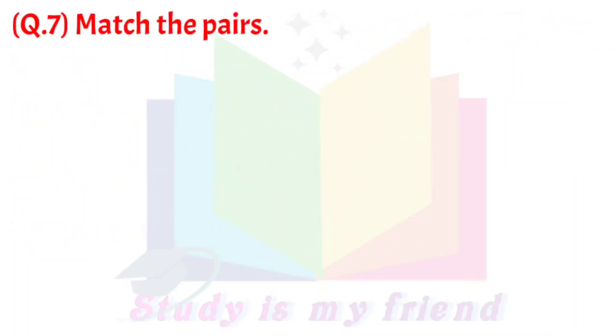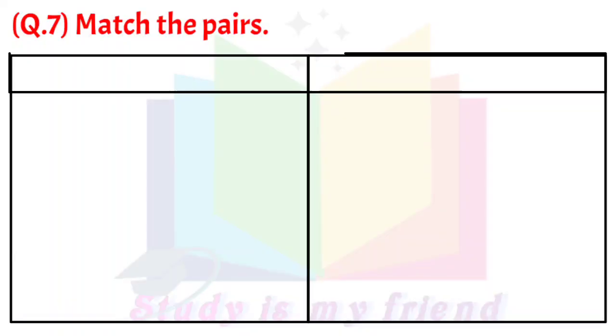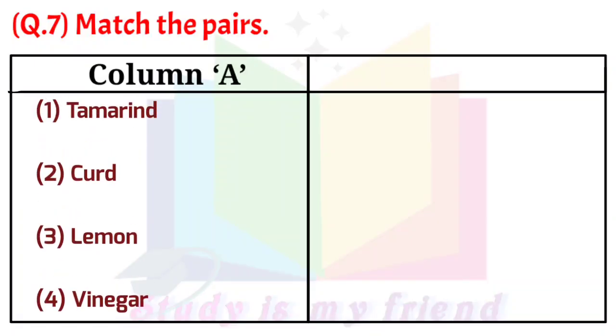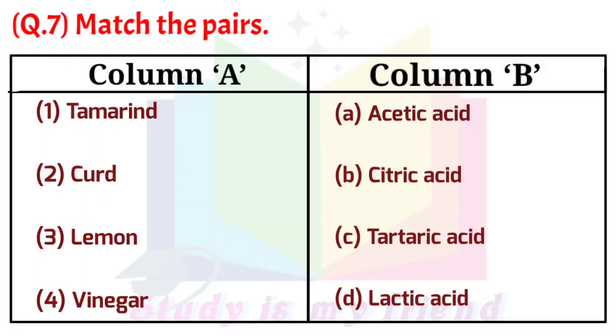Question 7: Match the pairs. Column A: 1. Tamarind, 2. Curd, 3. Lemon, 4. Vinegar. Column B: A. Acetic acid, B. Citric acid, C. Tartaric acid, D. Lactic acid.